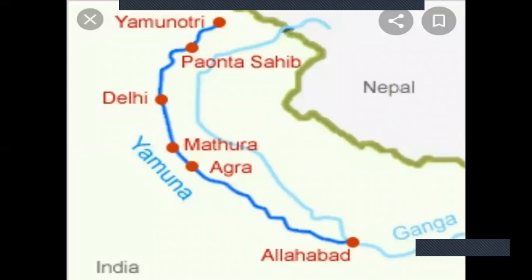Yamuna River. Yamuna is a tributary of River Ganga, and its origin is the Yamunotri Glacier on the south-western slopes of Bandar Pooch peaks in the uppermost region of the lower Himalayas in Uttarakhand. It is the longest river in India which does not directly flow into the sea. At the point of Allahabad Sangam, Ganga, Yamuna, and the mythical river Saraswati meet.